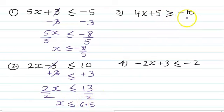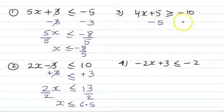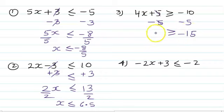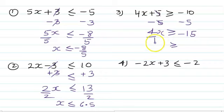Question 3: 4x plus 5 greater than or equal to minus 10. First step: minus 5 both sides. Minus 10 minus 5 is minus 15, and 4x remains. Next step: divide by 4 both sides. So we get x greater than or equal to minus 15 over 4.